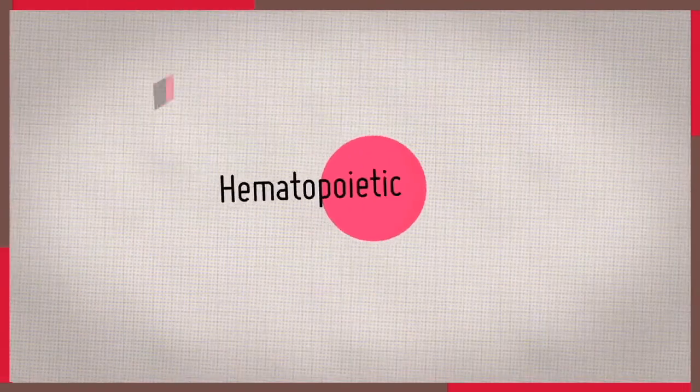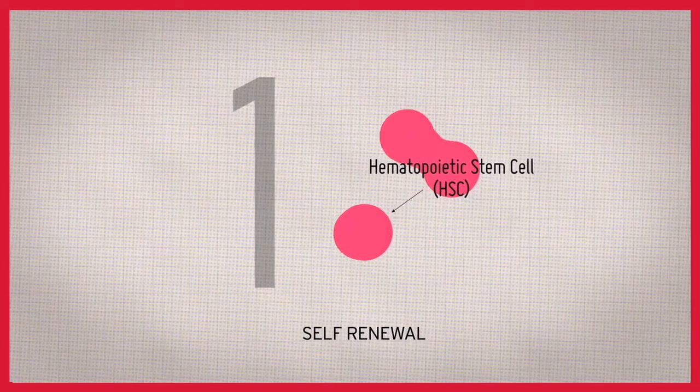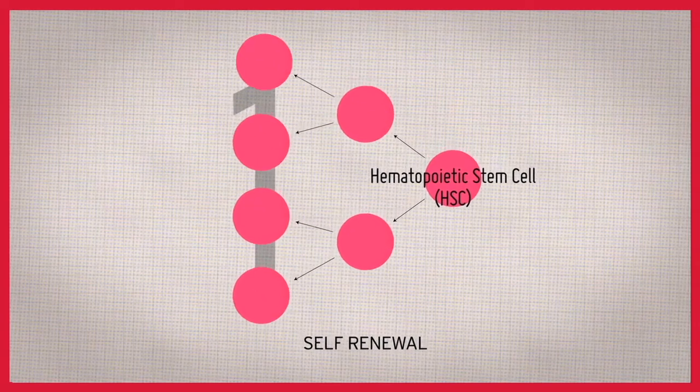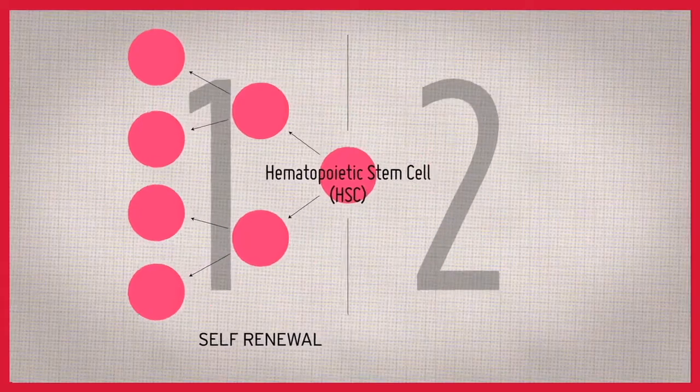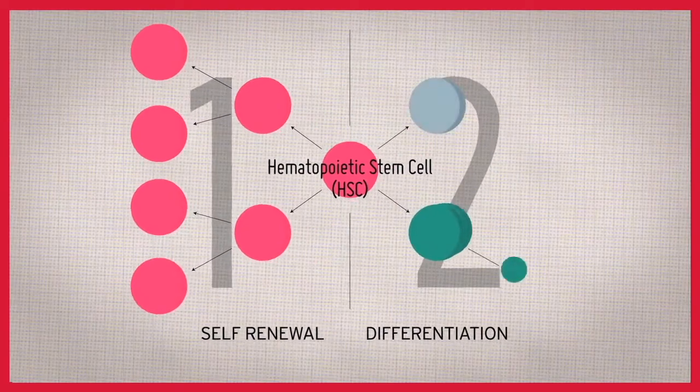Hematopoietic stem cells are unique because they continue to make more of themselves while also producing cells destined to become specialized blood cells.